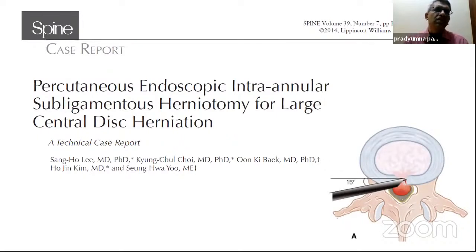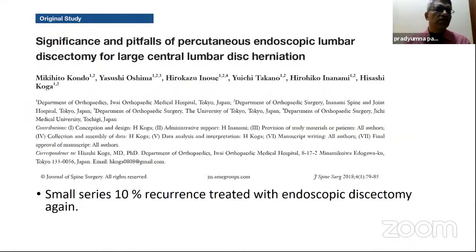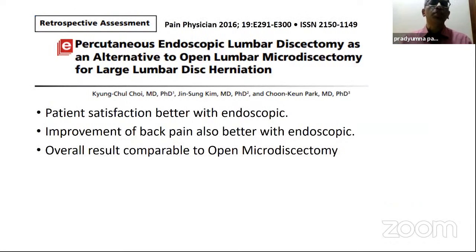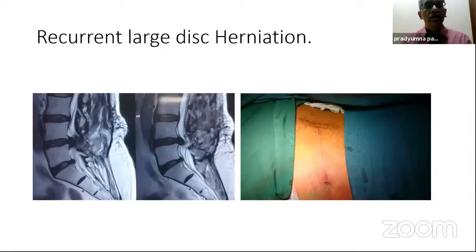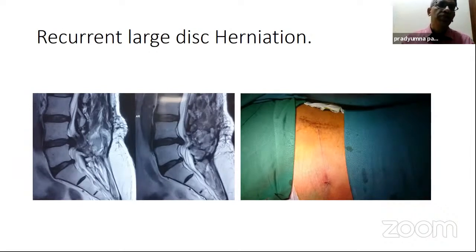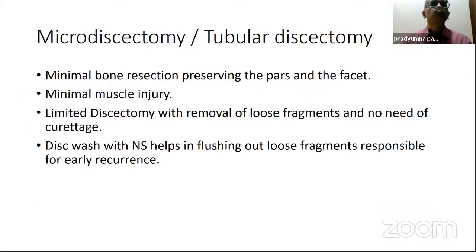Comparing endoscopic discectomy with open lumbar discectomy — results are comparable, but patient satisfaction was better with endoscopic, and improvement of back pain was also better with endoscopic discectomy. The endoscopic discectomy advantage: if you have a recurrent large disc herniation with scar in between, in selected contained herniations you can go transforaminal, avoid the scar, and the patient can have a good result. Now talking about micro discectomy, tubular discectomy, or endoscopic-assisted UBE — all procedures are essentially the same.